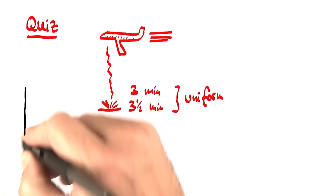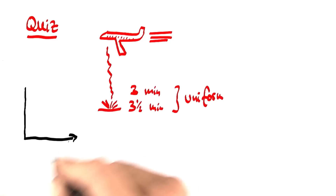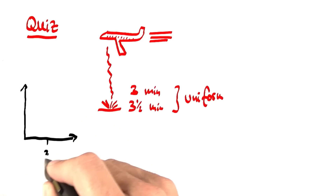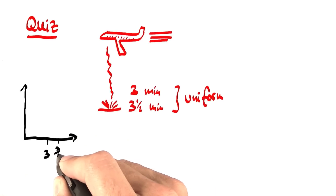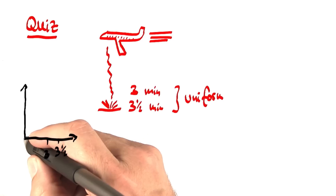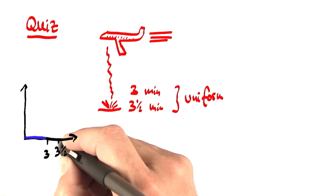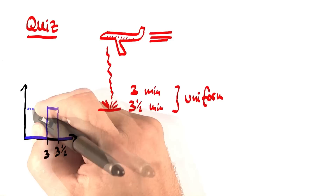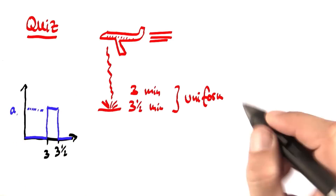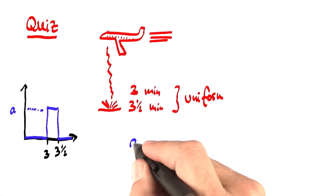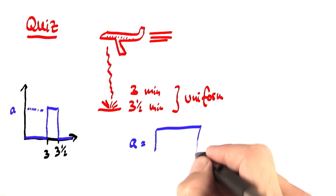Asking you the same question again — and there's something to be learned here. Here's 3, here's 3½. The density outside is 0, it's uniform, and there's a value here, a. I want you to tell me what is a.